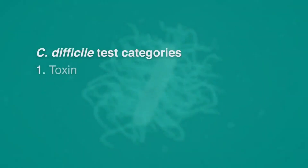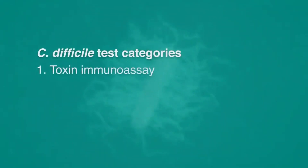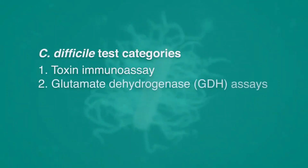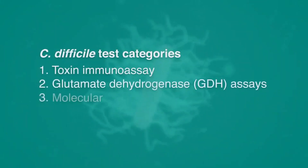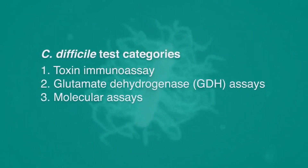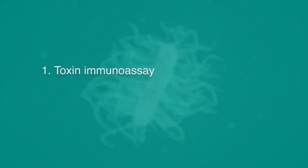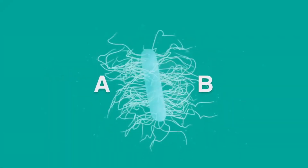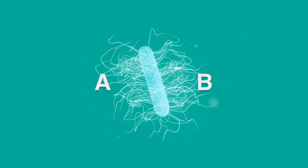You have toxin immunoassays, GDH antigen assays, and molecular assays. The toxin assays are immunoassays that detect both of the toxins. The toxins are designated toxin A and toxin B. These are the toxins that are responsible for the disease.